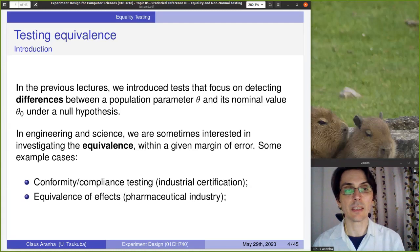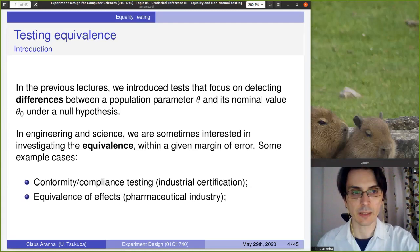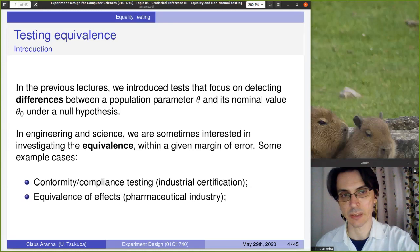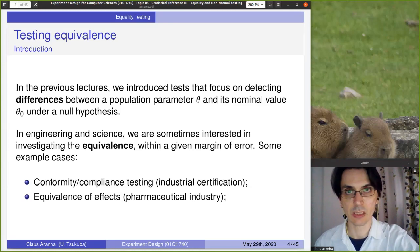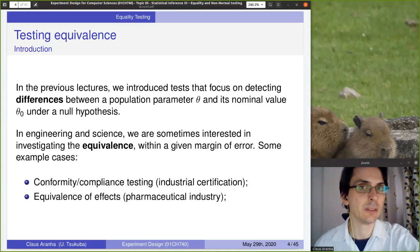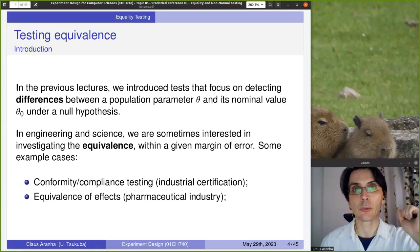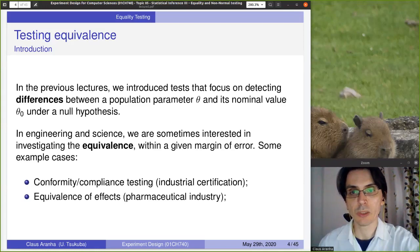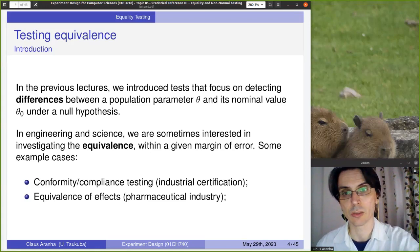However, sometimes — especially in engineering, but also generally in sciences — we want to test the equivalence of two quantities. One case is compliance testing, which is when we want to get a certification for a new industrial process. Engineering is a very conservative discipline, so the idea is that we're creating a new method and the most important thing is that this new method has the same security guarantees that the traditional methods have. We want to show that for certain security parameters, our method is the same as the methods that are already guaranteed. This would be a compliance testing scenario.